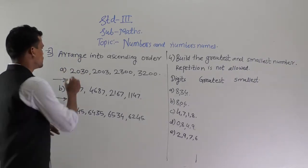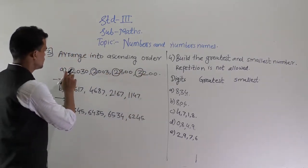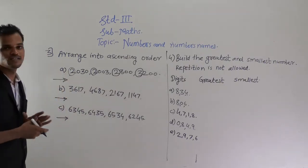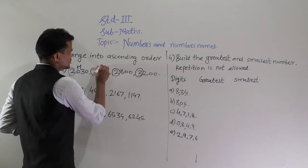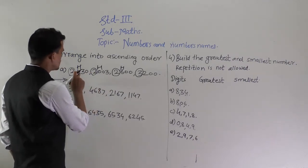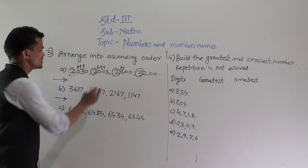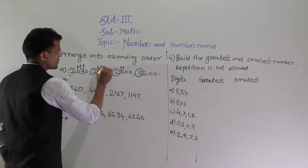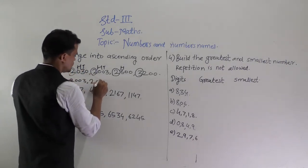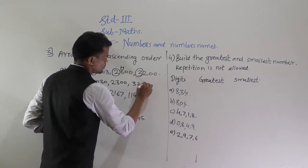Compare the thousands place digit. For 2030, 2003, and 2300, the thousands place digit is the same. Compare the hundreds place digit — in 2030 and 2003 it is also the same. So compare the tens place: here 3 and here 0 — 0 is smaller than 3. So write 2003 first, then 2030, then 2300, and at last 3200.